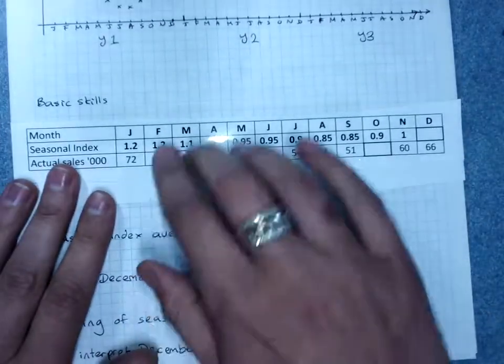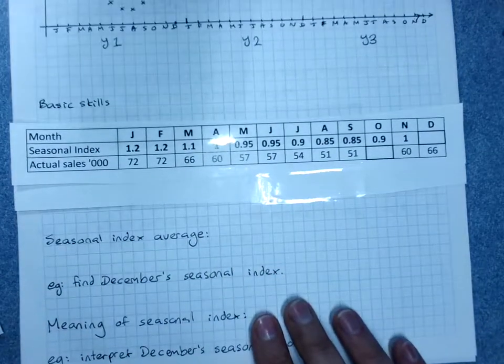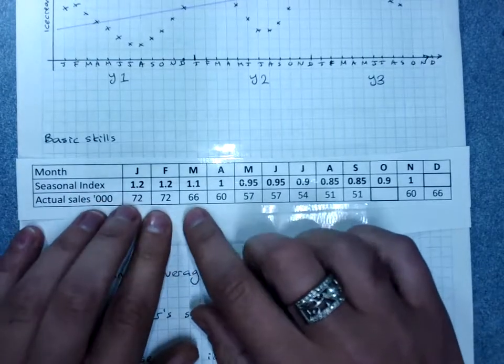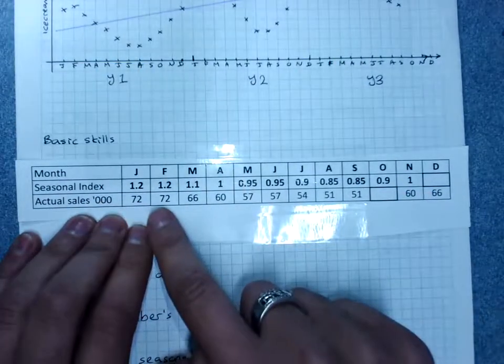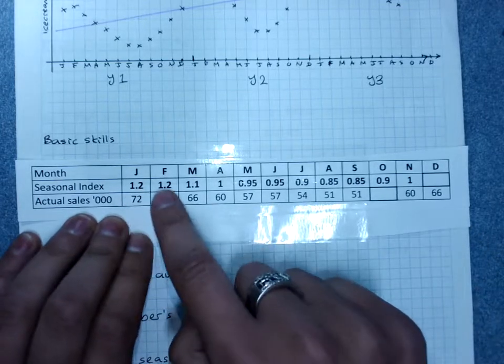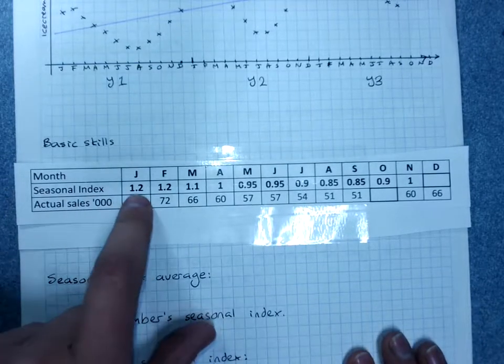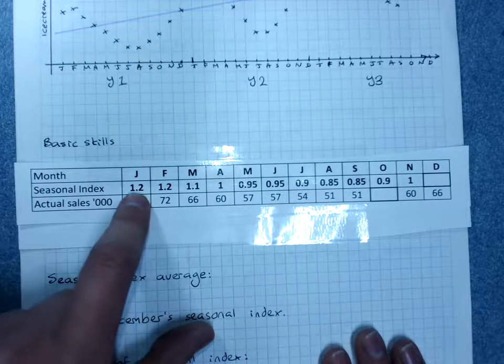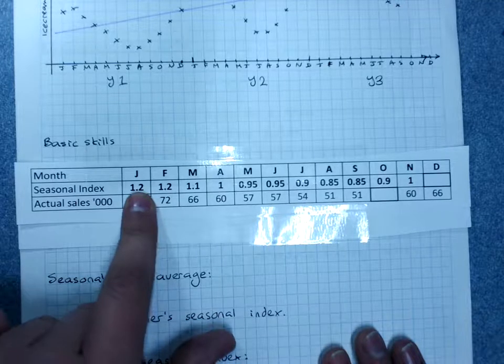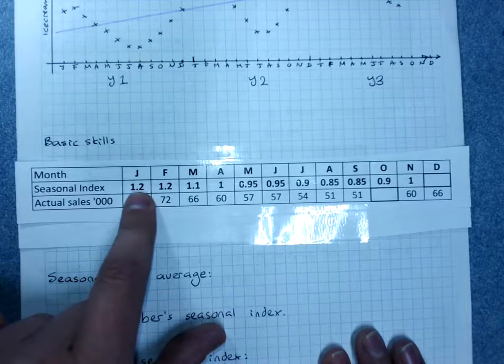Here is a table - sorry about the sticky tape there. We're looking at the actual sales, and I've just taken it roughly from here in thousands of our ice cream, and these are our seasonal indices. Now what a seasonal index of 1.2 means is that it's above one - we think of it like a percentage. It's twenty percent, point two is twenty percent above the monthly average.